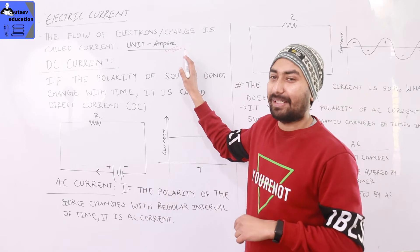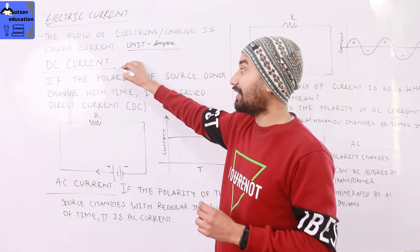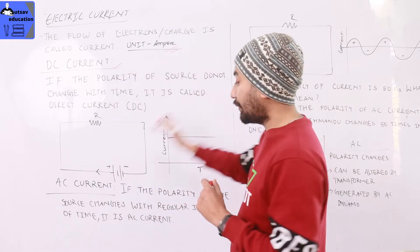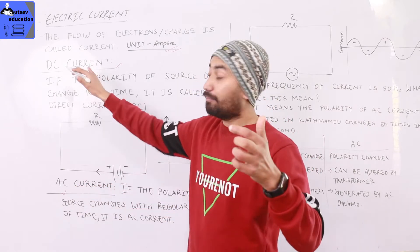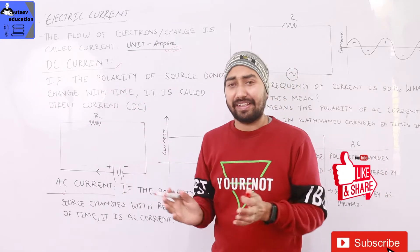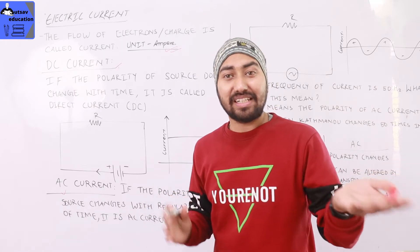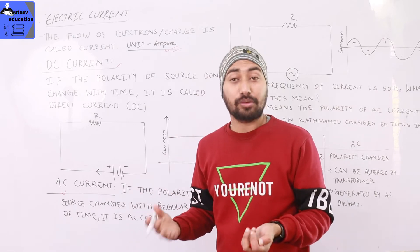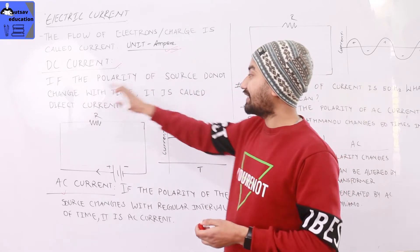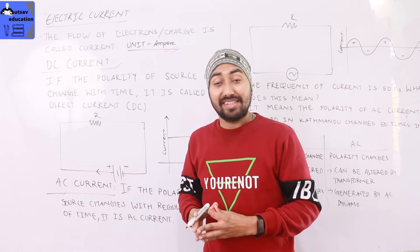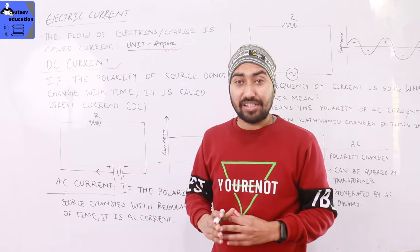Electric current is used in two different types: DC current, which means direct current, and AC current, which means alternating current. In DC current, the polarity of the source does not change with time. If the polarity of a source does not change with time, then it is called DC current.